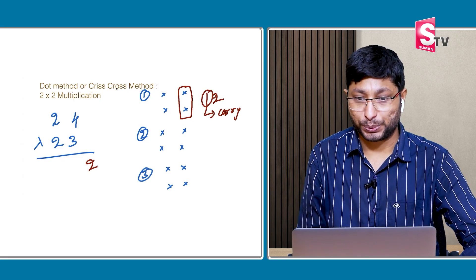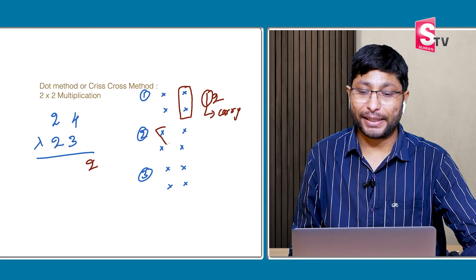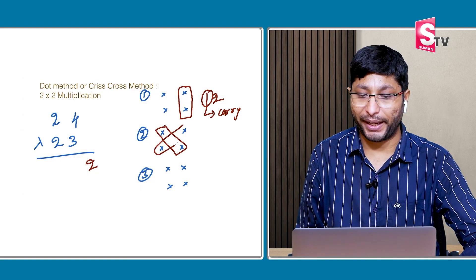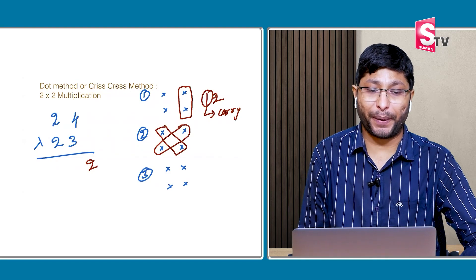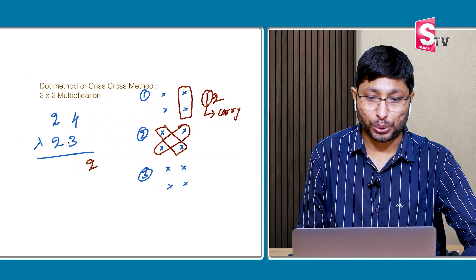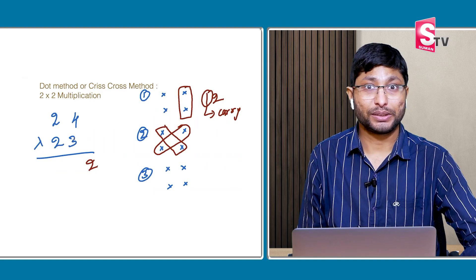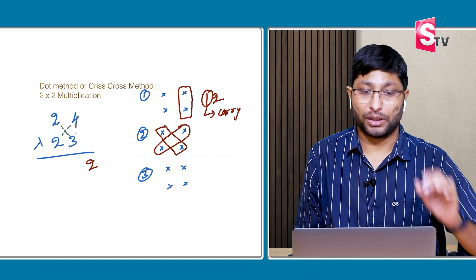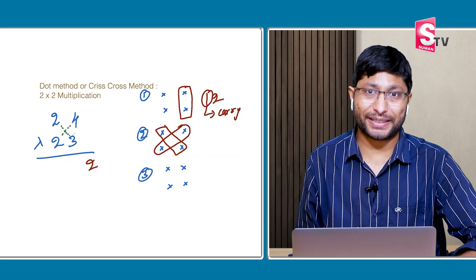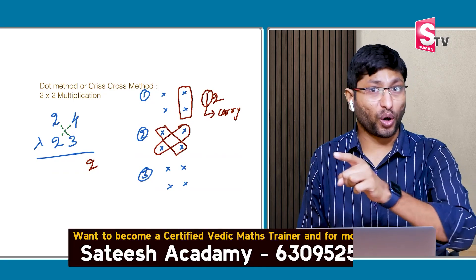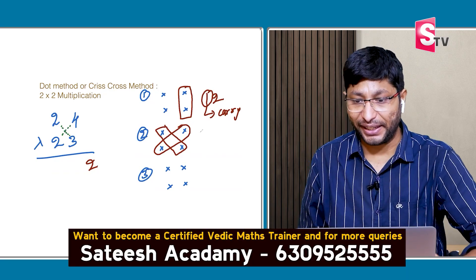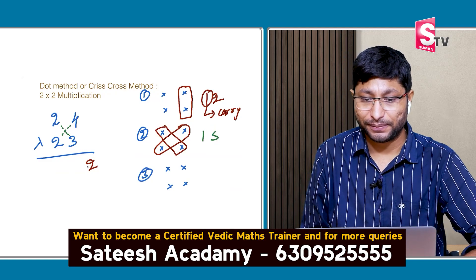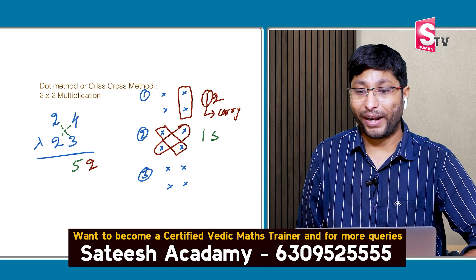Step 2: multiply units place into tens place and tens place into units place. 3 × 2 = 6, and 4 × 2 = 8. 8 plus 6 = 14. Plus 1 carry = 15. Write down the 5 in the answer, and 1 will be carry.